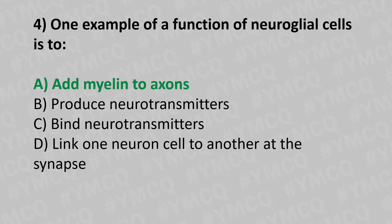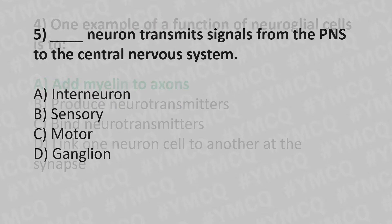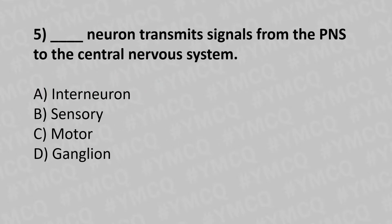Moving to our fifth question. Dash neurons transmit the signal from the PNS to the central nervous system. Option A: interneurons. Option B: sensory. Option C: motor. Option D: ganglion. And the answer is option B: sensory.